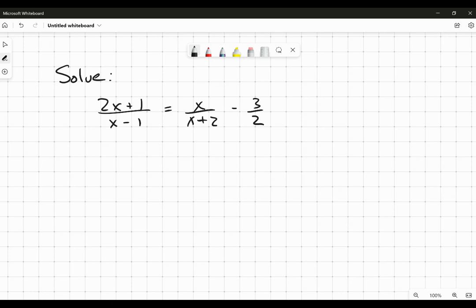All right, hi everybody. So in this video we're going to solve the rational equation 2x plus 1 divided by x minus 1 equals x over x plus 2 minus 3 over 2.